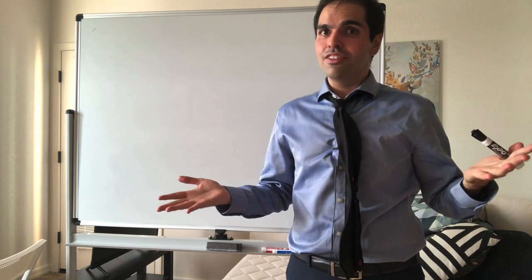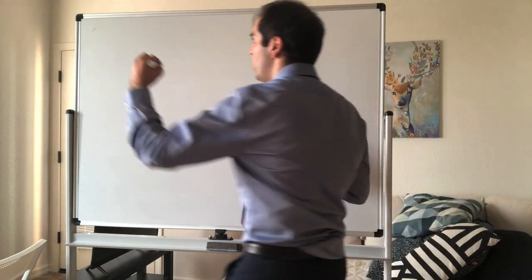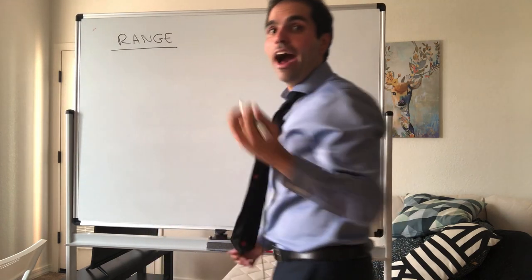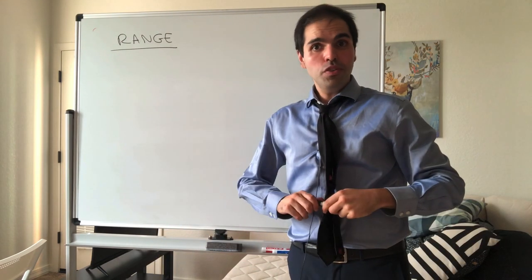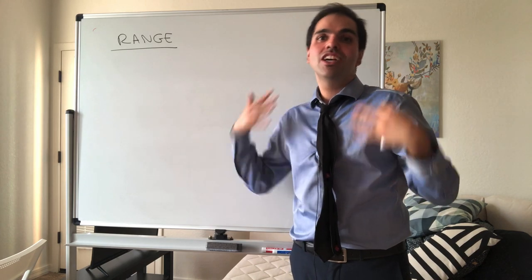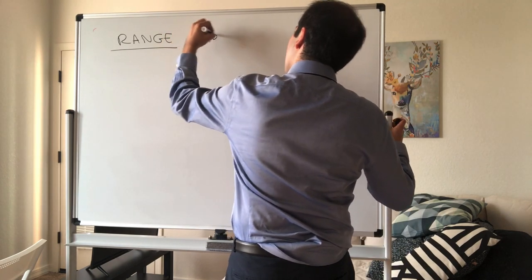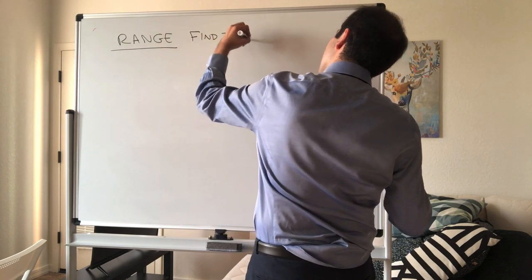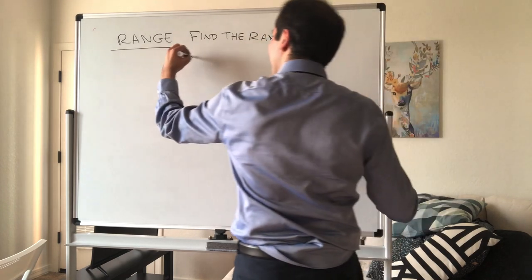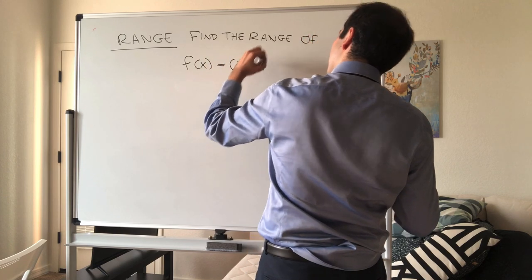So that is the domain of your function. Now on the other side of the coin is the concept of the range. And the range, all this is, is just the set of all possible outputs of f. So you see, domains, they talk about inputs, range, they talk about outputs.